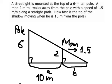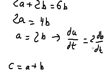But we know da/dt equals 1.5. So dividing both sides by 2, we have db/dt equals 1/2 da/dt.